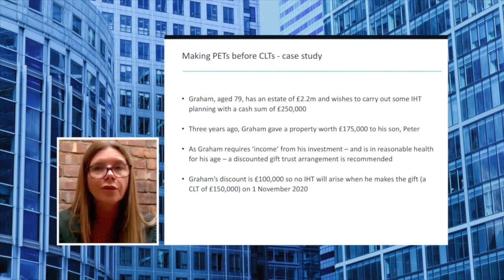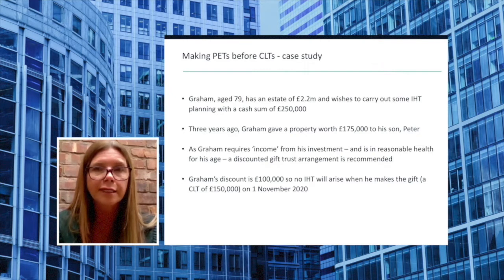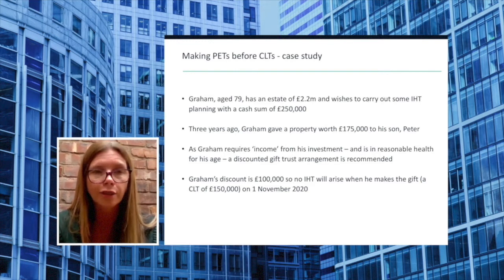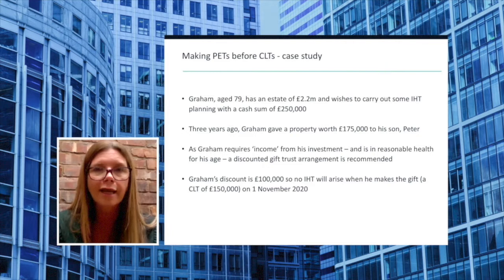He tells you that three years ago he gave a property worth £175,000 to his son Peter, but that he has made no further gifts other than to make regular use of his annual exemption. As Graham requires income from his investment and is in reasonable health for his age, a discounted gift trust arrangement is recommended.